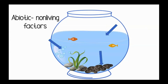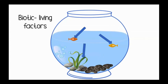Abiotic factors are the non-living components of an ecosystem. In the fishbowl, this includes the water and its temperature, the rocks, and the amount of oxygen. Biotic factors are living factors. The fish and the plants are the biotic factors in the fishbowl ecosystem.